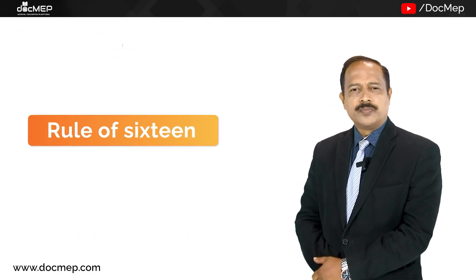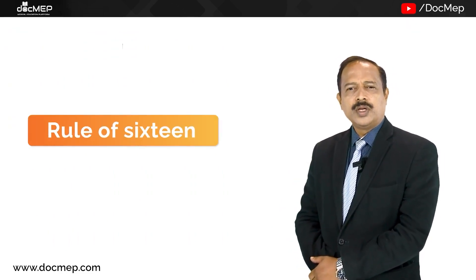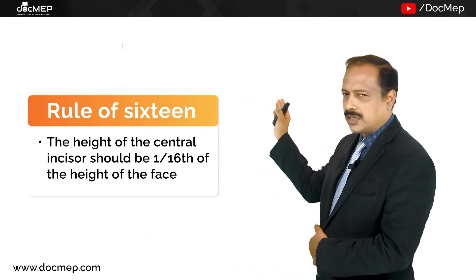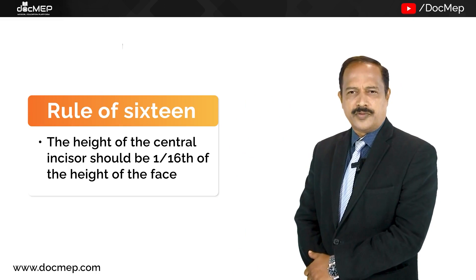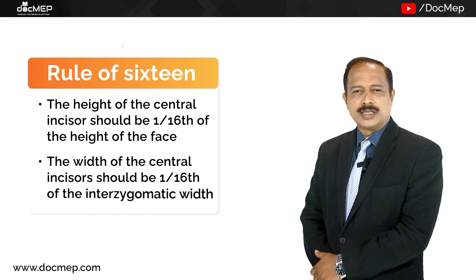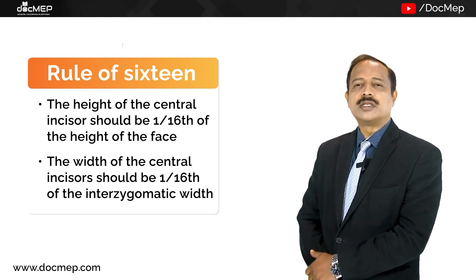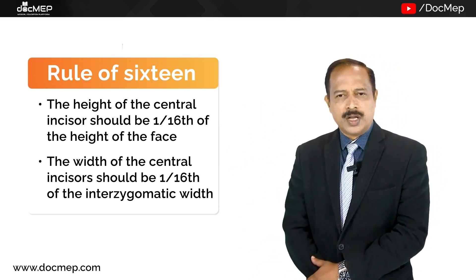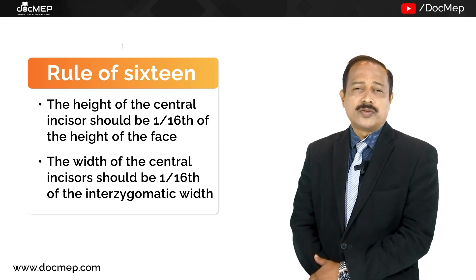The rule of sixteenth is the height of the central incisor should be around one sixteenth of the height of the face and the width of the central incisor should be around one sixteenth the interzygomatic width. This is the rule of sixteen.